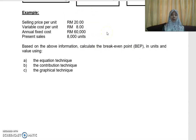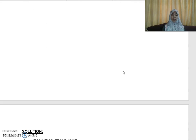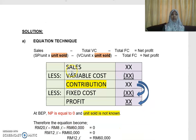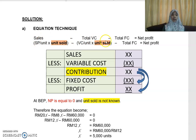Based on this example, how many units is your break-even point using the equation technique? Currently you are producing and selling 8,000 units. Using the equation: total sales less total variable cost minus total fixed cost gives you net profit, which is selling price per unit times units sold minus variable cost per unit times units sold minus total fixed cost.